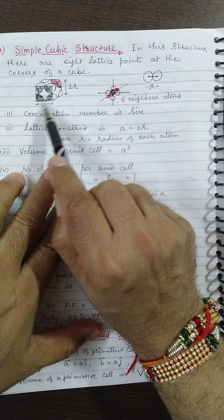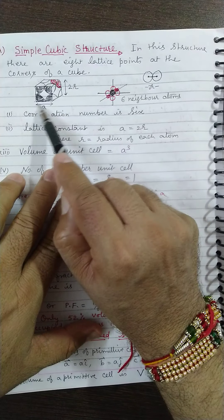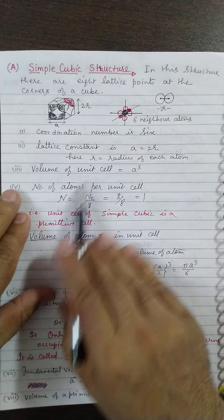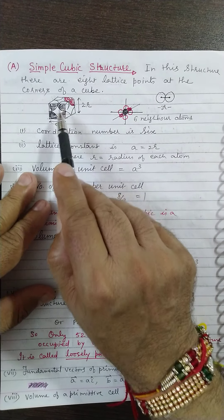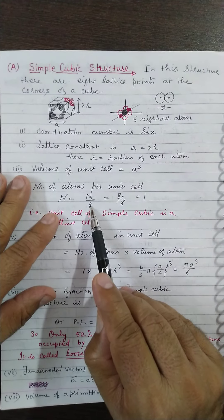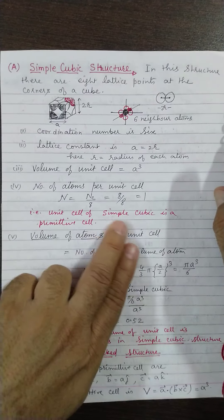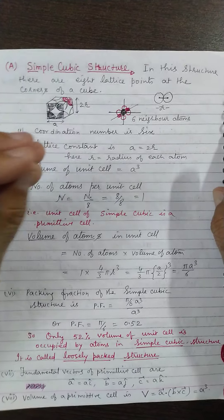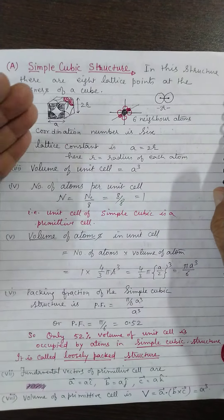If this is the lattice parameter, then volume of a unit cell will be A³ because it is a cubic cell. Number of atoms per unit cell is very simple—there is no atom at the face, no atom at the body, so only 8 atoms are at the corners. So Nc/8 = 8/8 = 1. This means unit cell of simple cubic is a primitive cell also.